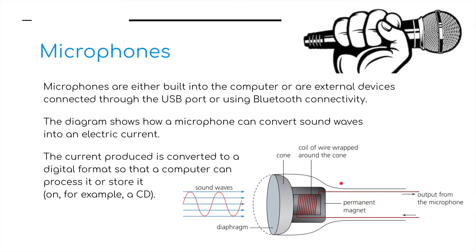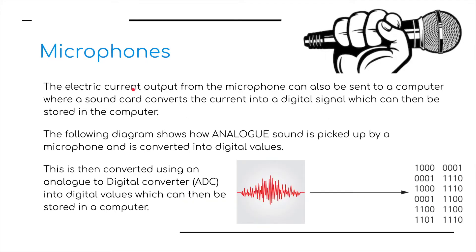The diagram shows how a microphone converts sound waves into electronic current, and we need to perform ADC — Analog to Digital Conversion. The current produced is converted to a digital format so the computer can process and store it. For example, we can burn sound onto a CD, or the electronic current output from the microphone can be sent to a computer where a sound card converts it into digital sound.